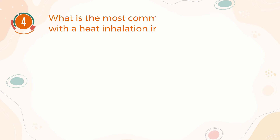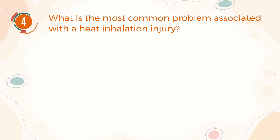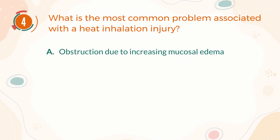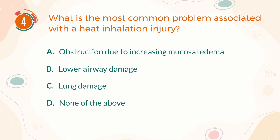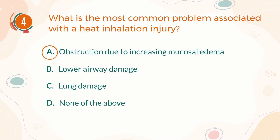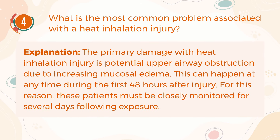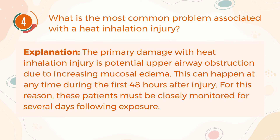Number 4. What is the most common problem associated with a heat inhalation injury? A, obstruction due to increasing mucosal edema. B, lower airway damage. C, lung damage. D, none of the above. The correct answer is A, obstruction due to increasing mucosal edema. The primary damage with heat inhalation injury is potential upper airway obstruction due to increasing mucosal edema. This can happen at any time during the first 48 hours after injury. For this reason, these patients must be closely monitored for several days following exposure.